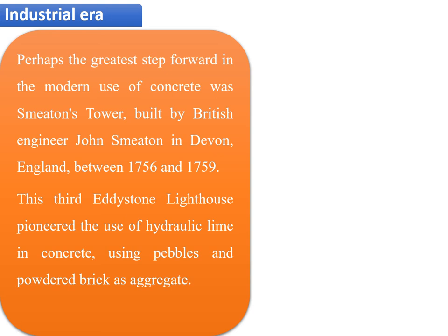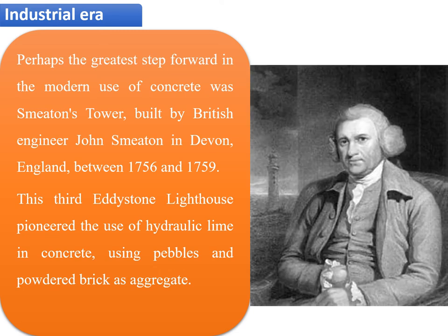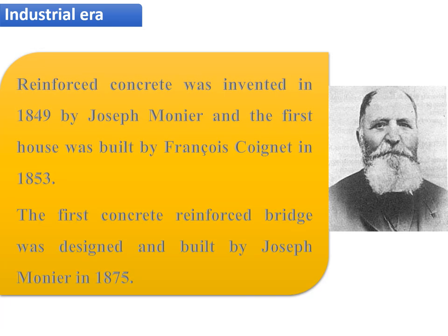Perhaps the greatest step forward in the modern use of concrete was Smeaton's Tower, built by British engineer John Smeaton in Devon, England, between 1756 and 1759. This third Eddystone Lighthouse pioneered the use of hydraulic lime in concrete, using pebbles and powdered brick as aggregate. Also during the industrial era, reinforced concrete was invented in 1849 by Joseph Monier, and the first reinforced concrete house was built by François Coignet in 1853. The first concrete-reinforced bridge was designed and built by Joseph Monier in 1875.